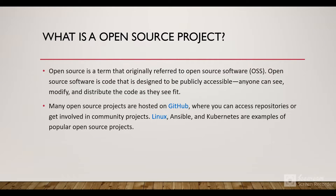So firstly, what is an open source project? An open source project is a term originally referred to as open source software. Open source software is software where the code is publicly accessible — anyone can see, modify, and distribute the code as they see fit. There are many open source projects hosted on GitHub; some popular examples are Linux, Kubernetes, etc. Basically, the company developing the software makes the code publicly accessible so other users or companies can use it and improve the code quality.